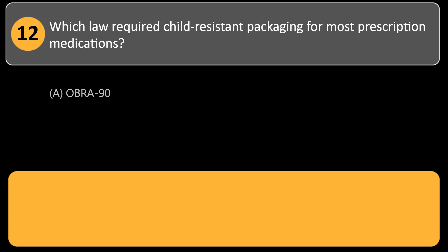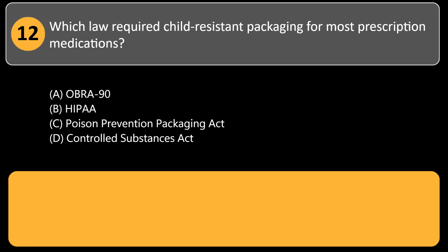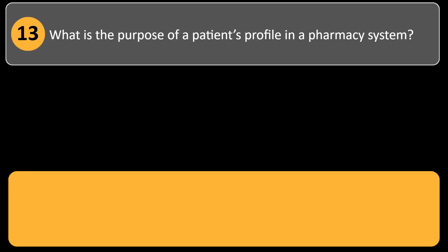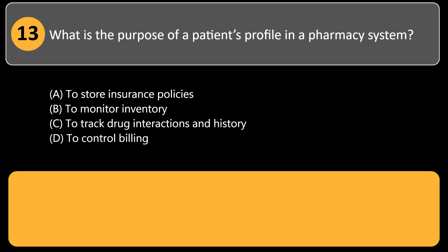Which law required child-resistant packaging for most prescription medications? A) OBRA 90, B) HIPAA, C) Poison Prevention Packaging Act, D) Controlled Substances Act. Answer: C. The Poison Prevention Packaging Act of 1970 mandates child-resistant containers for most drugs.